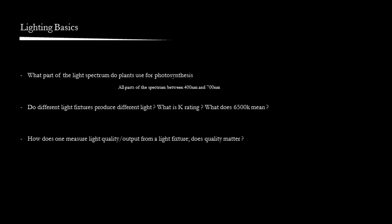Next question, do different fixtures produce different light? What is K rating? And the answer is, light is uniform, and the K rating is just a color hue. Whether or not it is a good fixture depends on the spectrum, efficiency, the amount of photons produced. Whether it has the spread you want, whether or not it has the color hue that renders your plants in a nice manner, these are the factors that determine whether a light fixture is good or not.